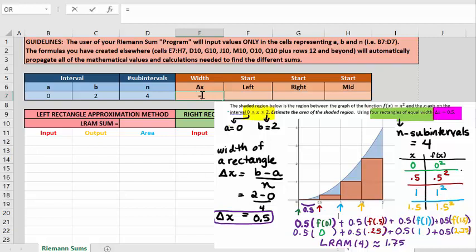So now our formula for delta x is going to go in cell E7. So I type equals, and then I click on C7 minus, and click on B7, meaning B minus A values, divided by n, which is located in D7, and hit enter.